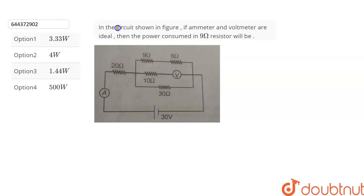The question is in the circuit shown in the figure, if ammeter and voltmeter are ideal, then we have to find the power consumed in 9 ohm resistor. And we are given four options from which we have to choose the correct option.